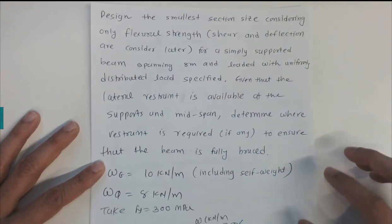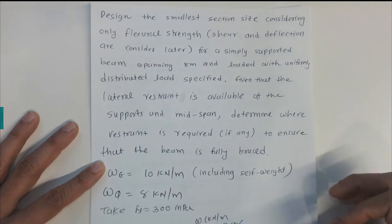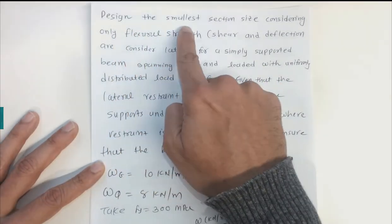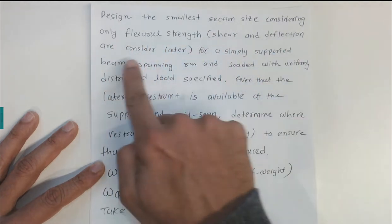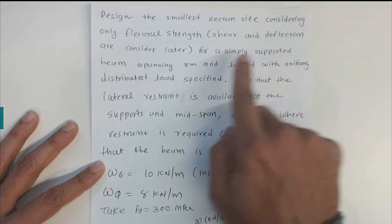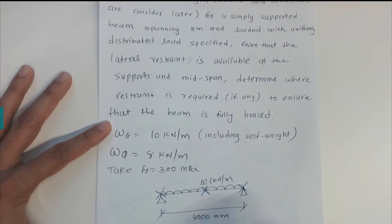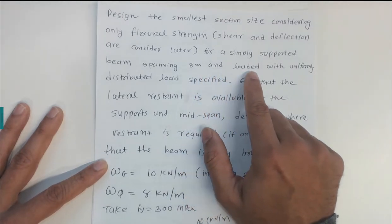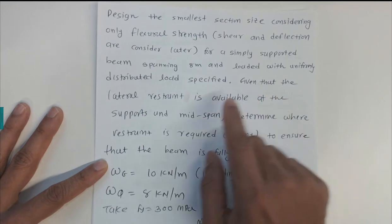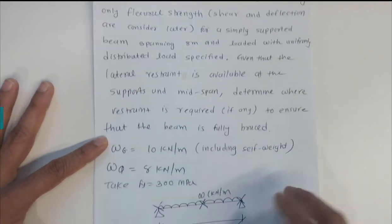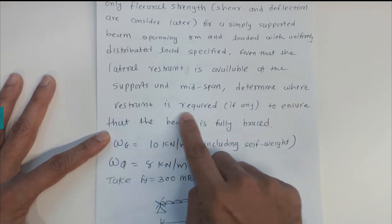This video explains finding the required beam section for given loading conditions — design the smallest section size considering only flexure and shear. For a simply supported beam spanning 8000 millimeters, loaded with a uniformly distributed load, lateral restraint is available at the supports and mid-span. We need to determine where restraint is required.